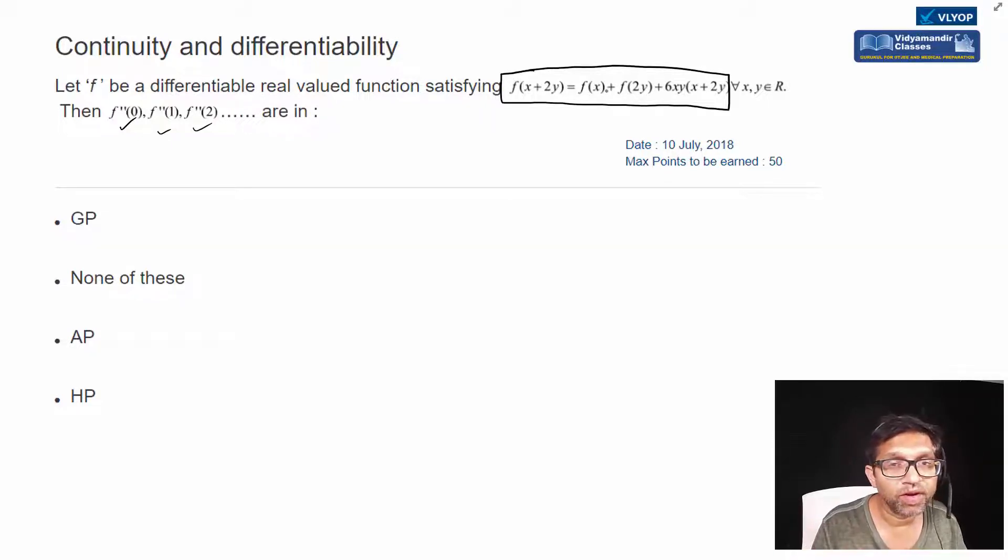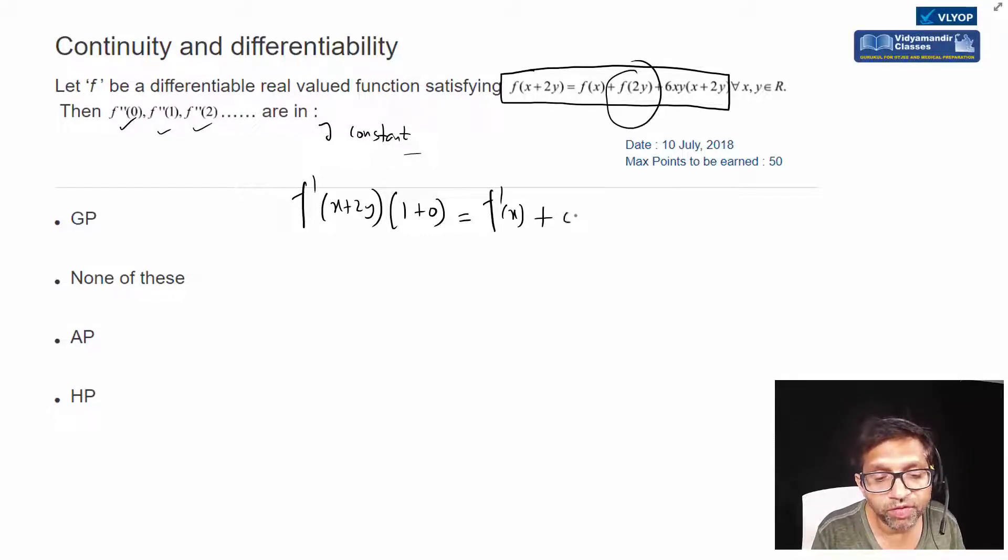First y constant, differentiate with respect to x. Left hand side is f'(x+2y) into derivative of x+2y - x derivative is 1, y derivative is 0 because it is constant. Same way on this side, derivative of f(x) is f'(x) and derivative of f(2y) is zero because we have taken y constant.